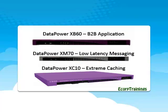Here we observe a few other models: Data Power XB60 for B2B applications, Data Power XM70 for Low Latency Messaging, and Data Power XC10 for Extreme Caching.